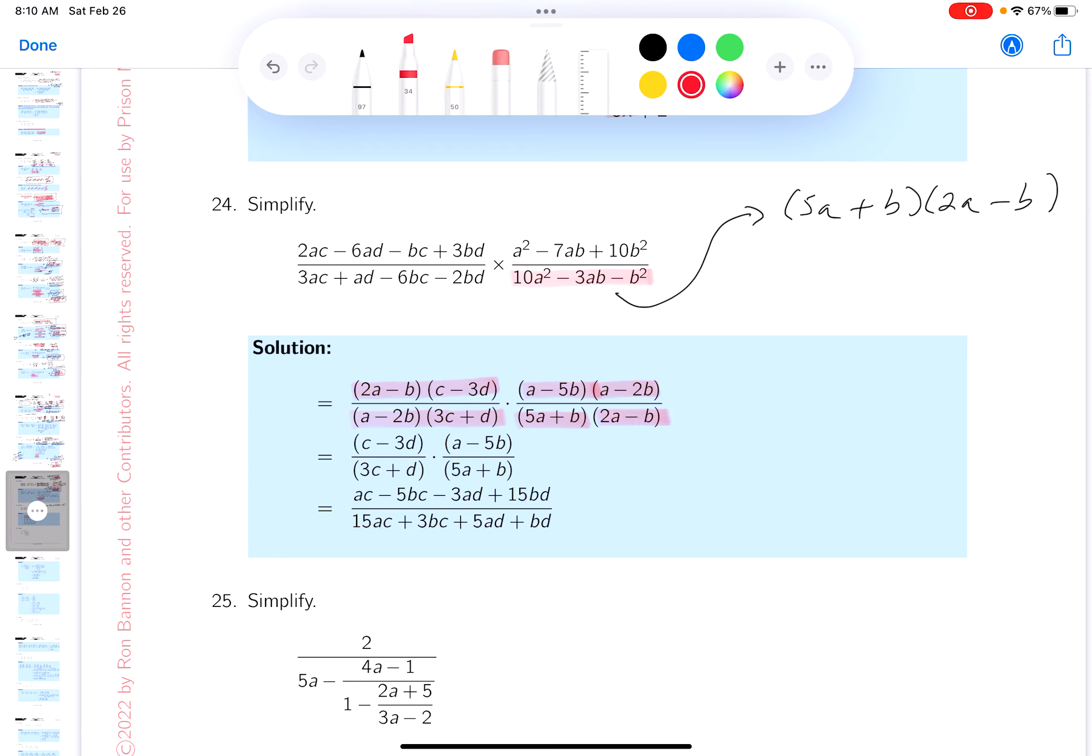So I'm at that stage now. I'm at this stage over here now. What am I looking for now? I'm looking for cancellations. Now I'm looking for factors that are identical in top and bottom. 2a minus b, 2a minus b - that's a conditional cancellation, provided 2a minus b is not equal to zero.